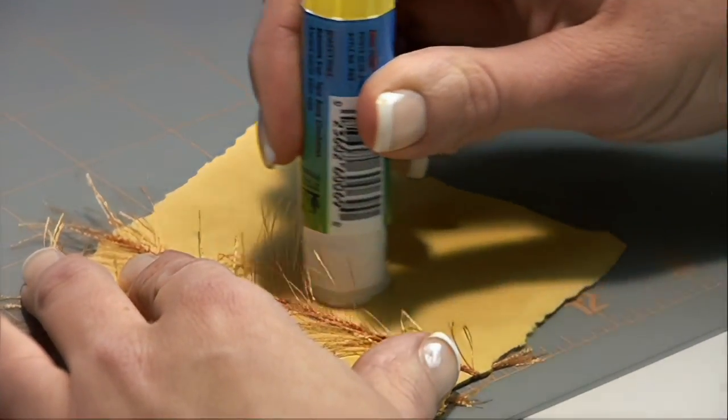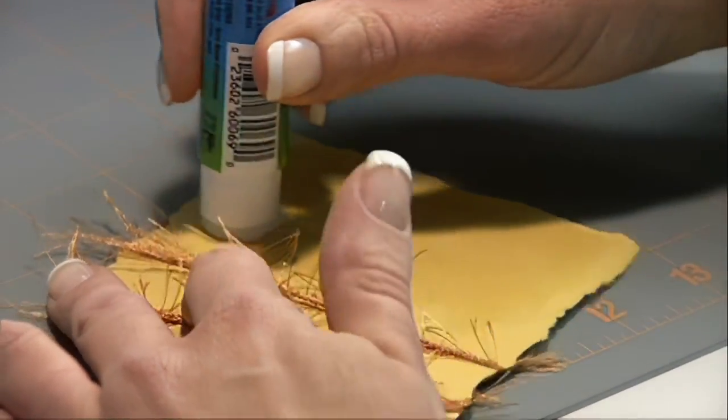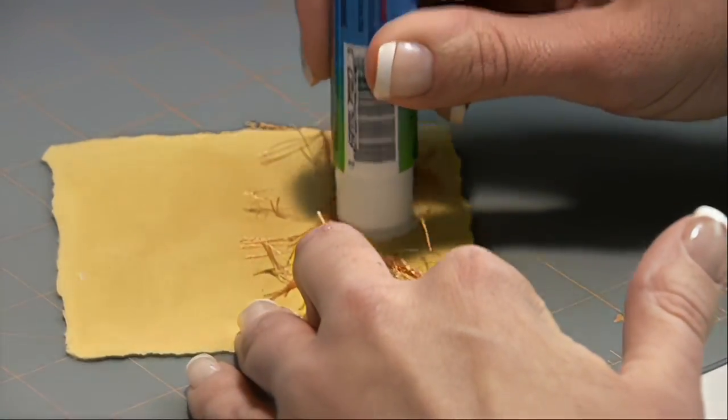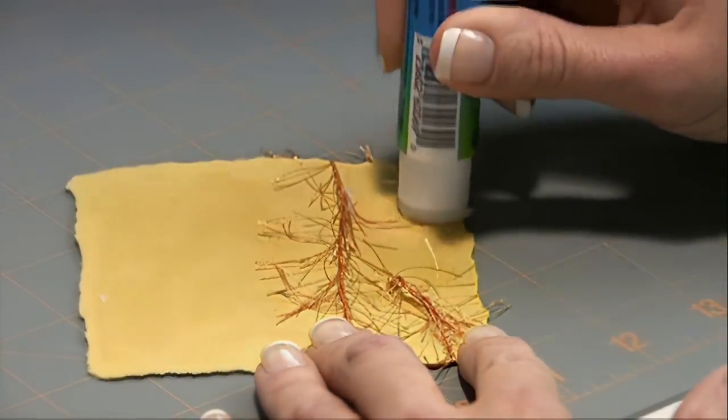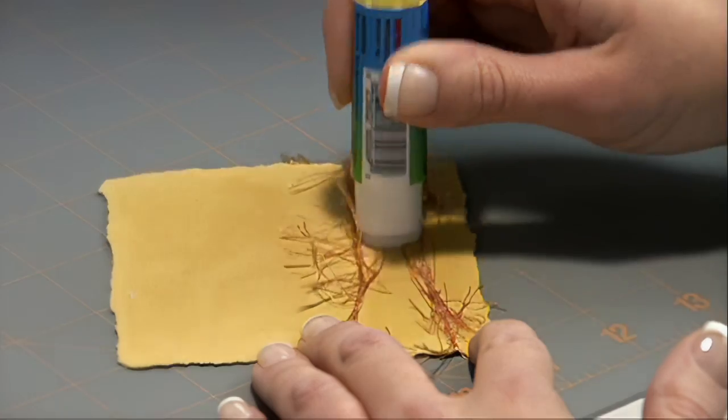It is now time to attach it to the face of our card. And we're going to use a glue stick for that purpose. We will want to use a lot of glue in all the edges and corners. Try and work around the fibers so that you have glue in all areas.